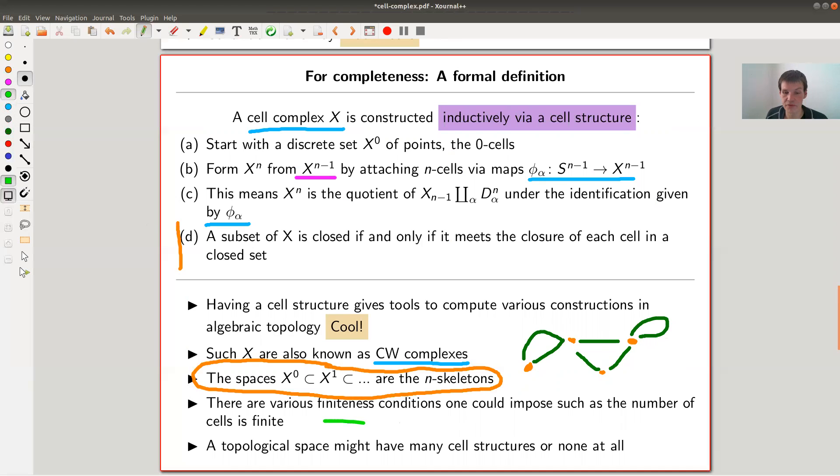In practice, you would impose a lot of finiteness conditions. Hatcher is more precise as usual. Hatcher is linked in the description below. This would be a finite CW complex. Some CW complexes might not be finite. For example, you could impose finitely many cells per step, or that you stop at a finite number of steps.